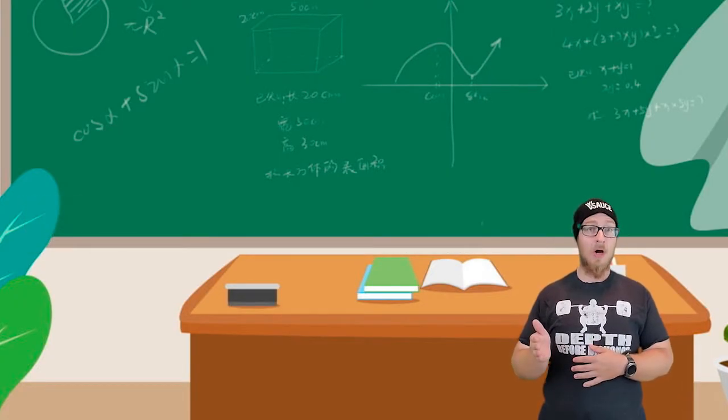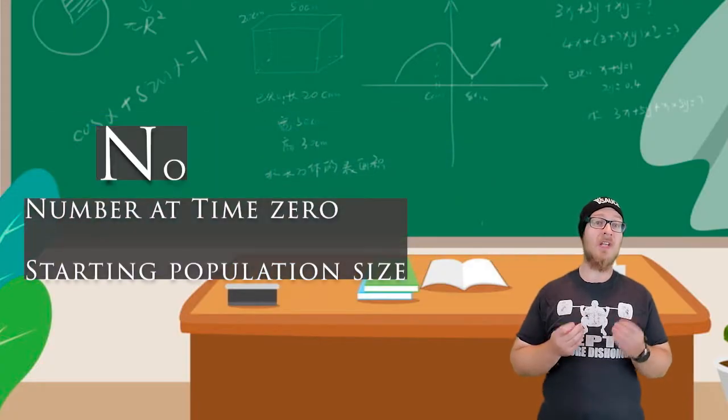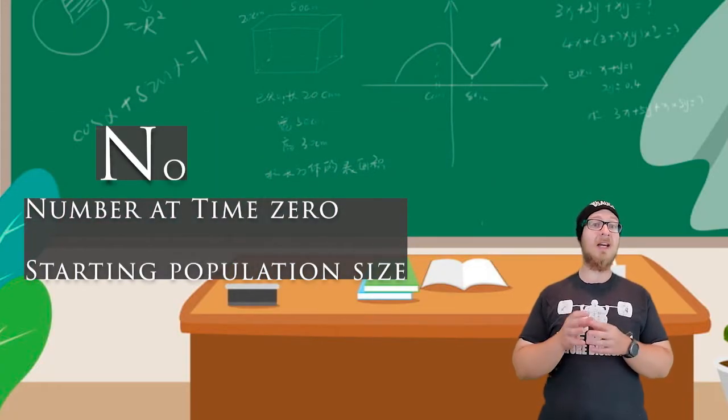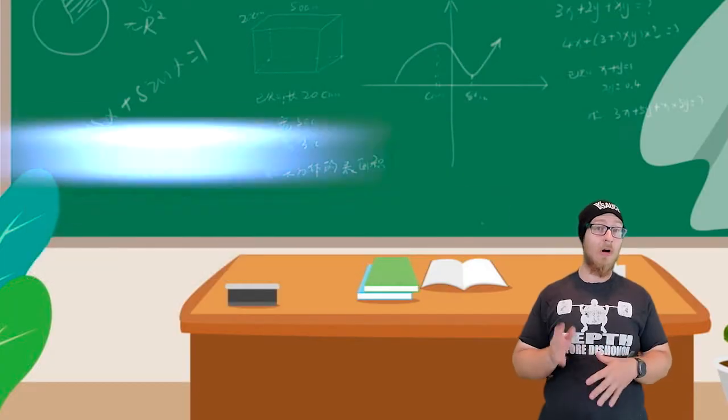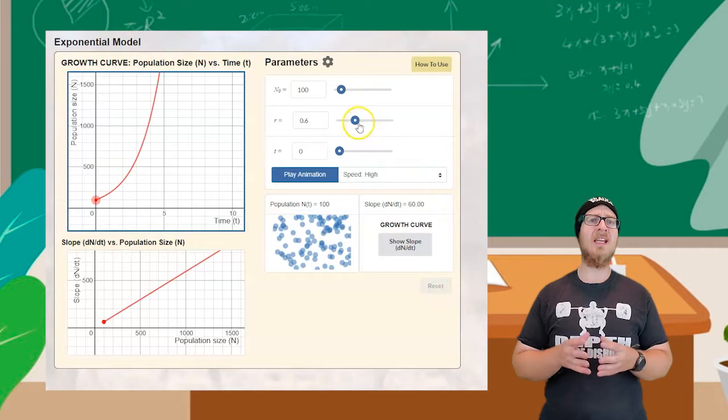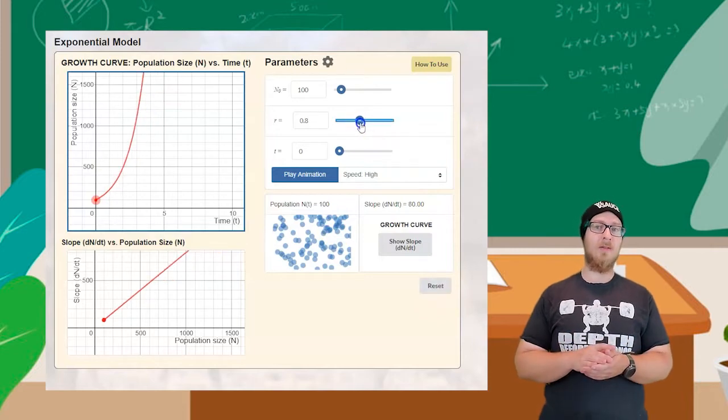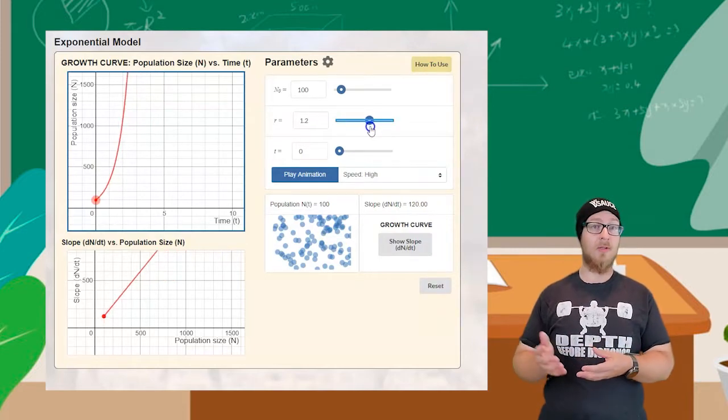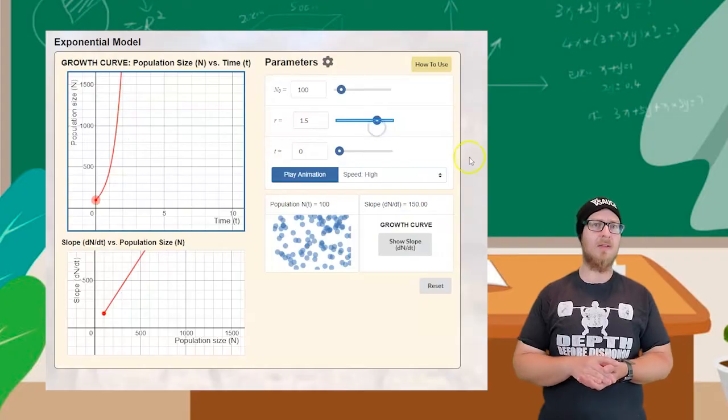N0 represents the number of individuals at time zero, and R represents the growth rate. Notice as I increase the growth rate, the faster my population begins to increase in size.